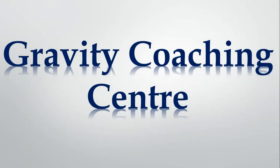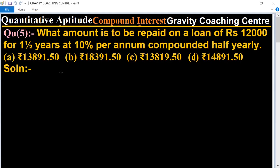Welcome to our channel Gravity Coaching Center, Quantitative Aptitude chapter Compound Interest. Question number 5: What amount is to be repaid on a loan of rupees 12,000 for one and a half years at 10% per annum compounded half yearly?